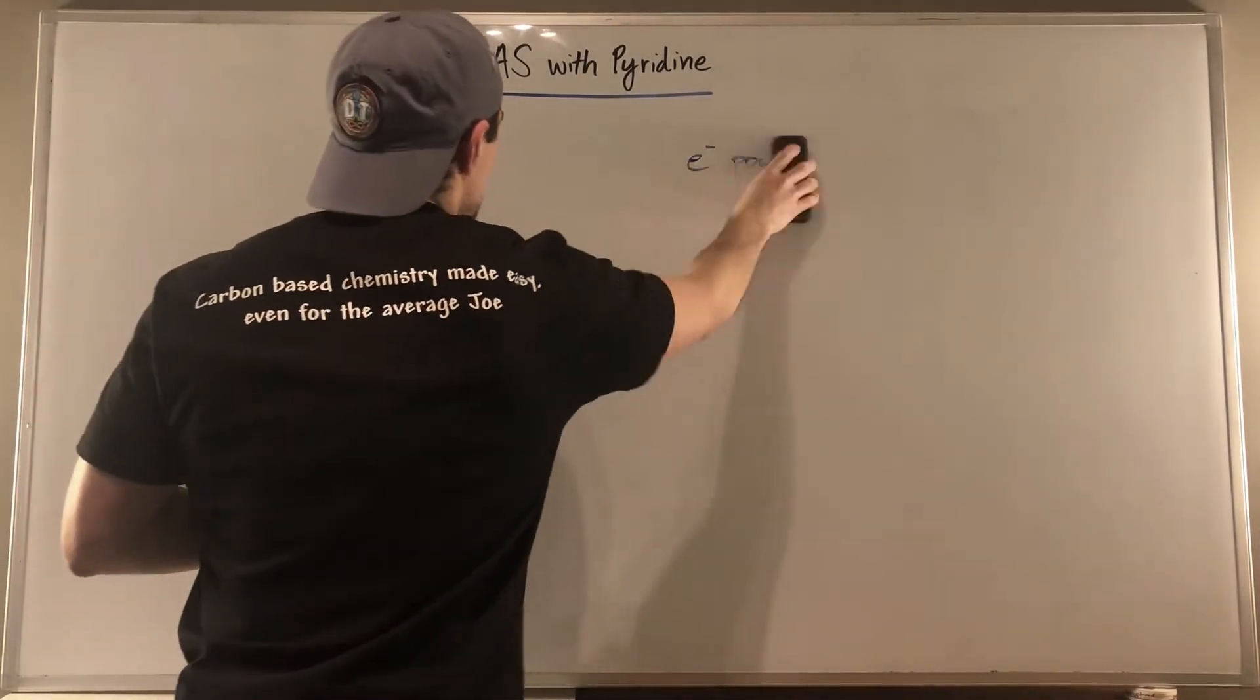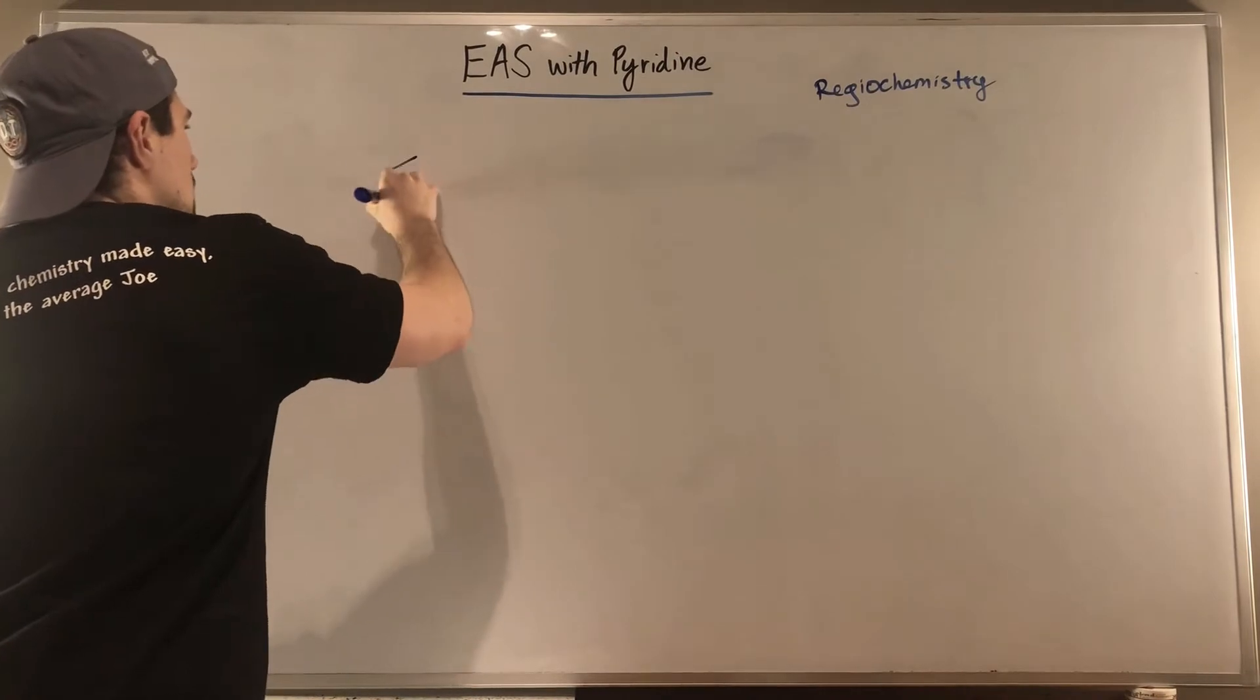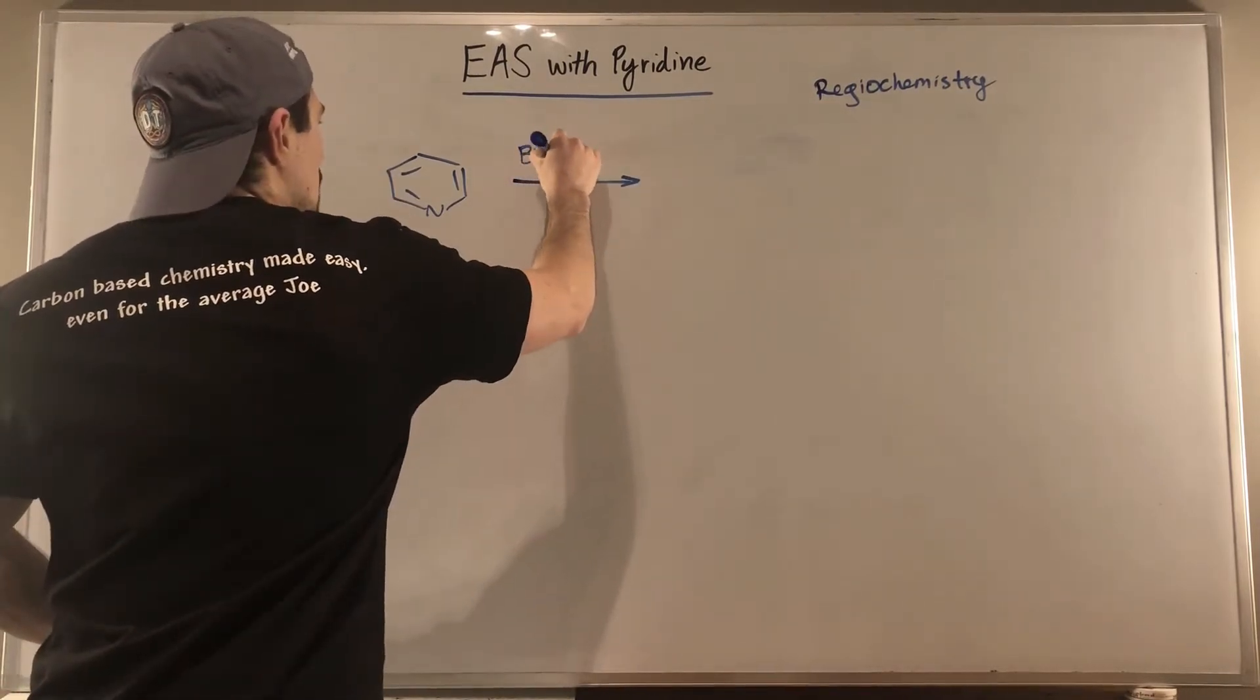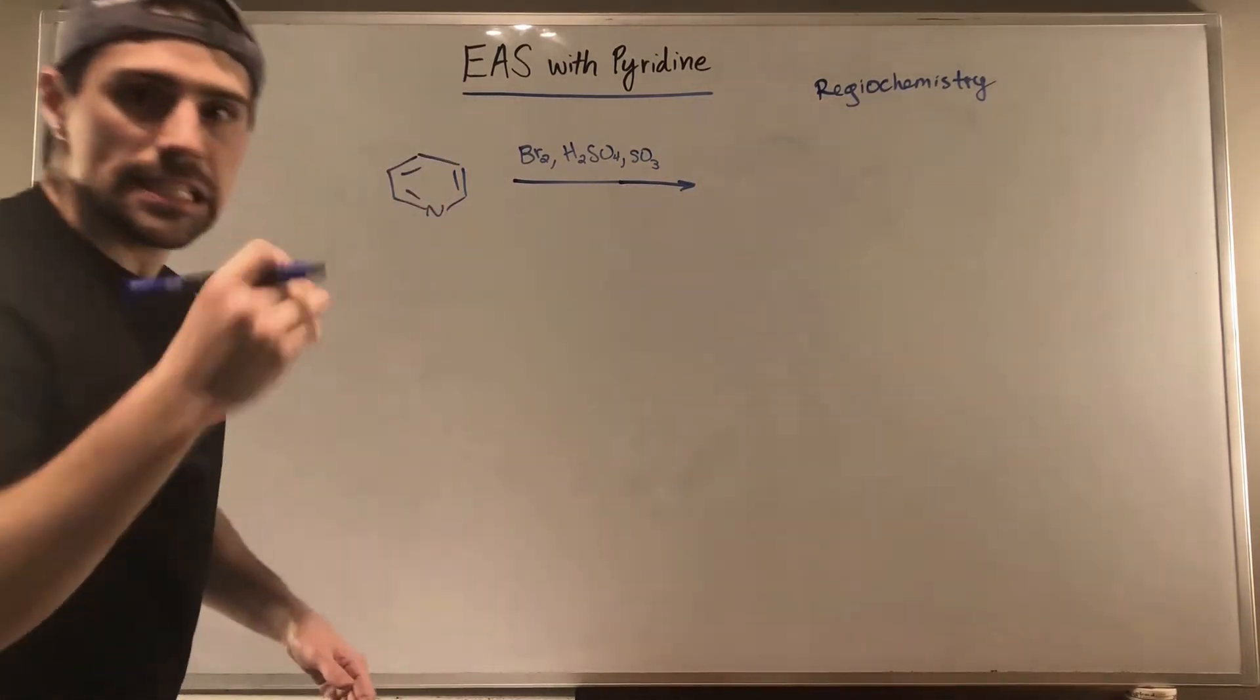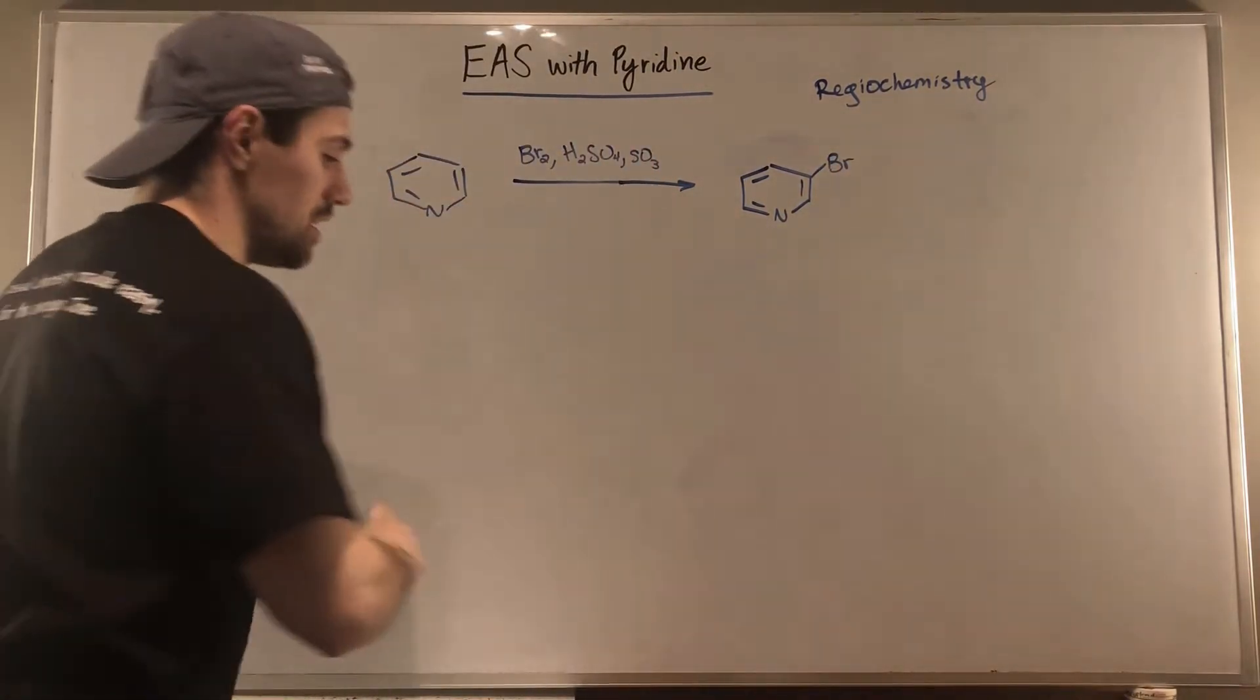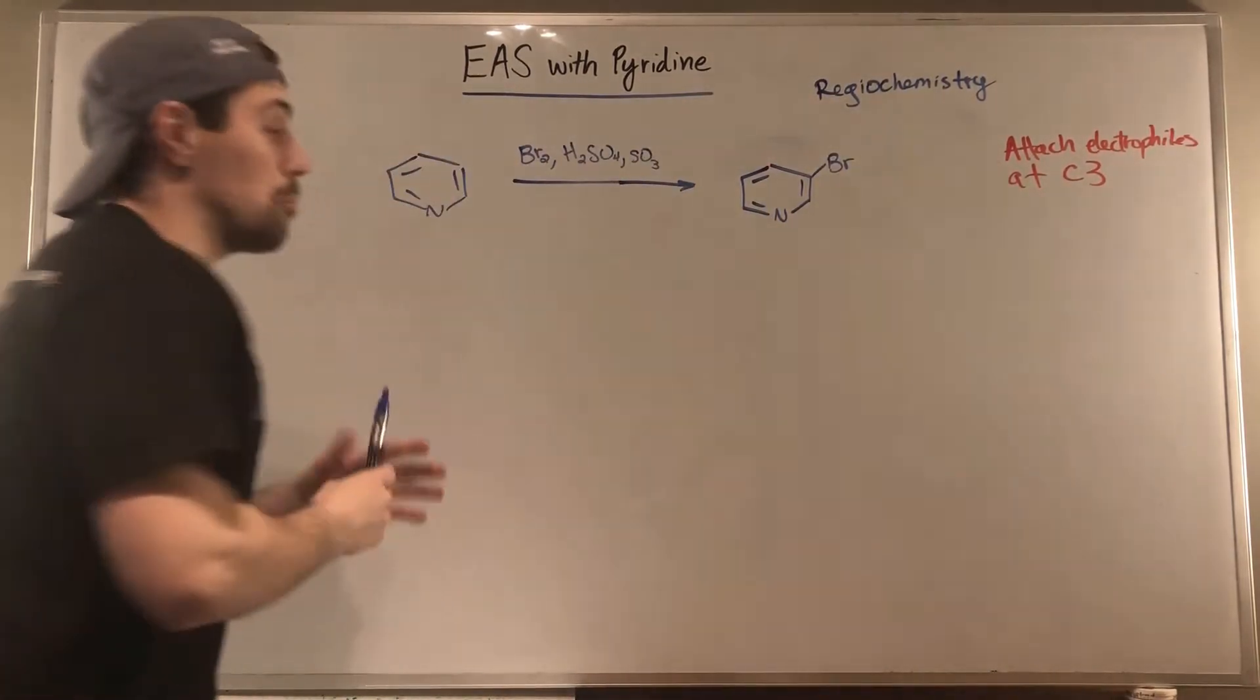Let's first talk, before we talk about making them better, let's talk about regiochemistry - where is this all happening? So let's take a look at a reaction. For example, take a look at a bromination. Again, this reaction by itself wouldn't be great, but we're just looking to see where things are happening. If we do a bromination with BR2 and H2SO4 at 350°C, we get attachment at C3.